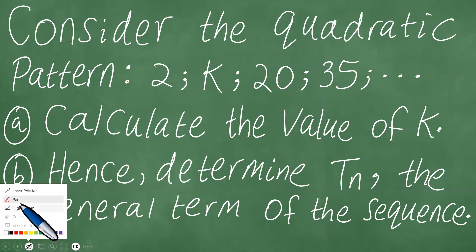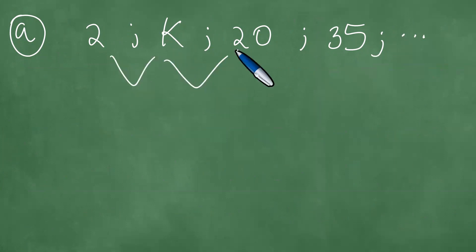First things first, we write down this sequence in part a. We start with 2, k, 20, 35, and so on. So here we have k minus 2, 20 minus k, and we have 35 minus 20, which is 15.